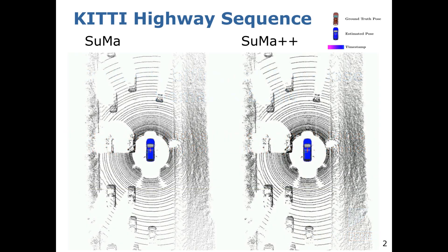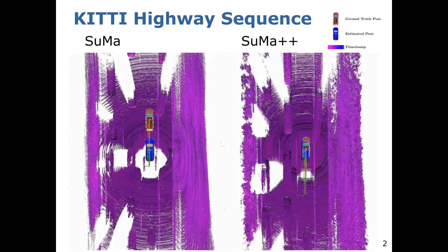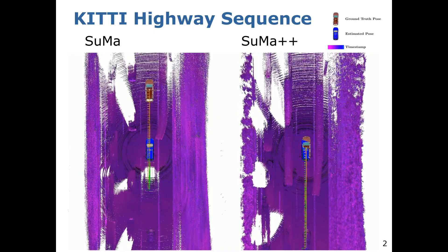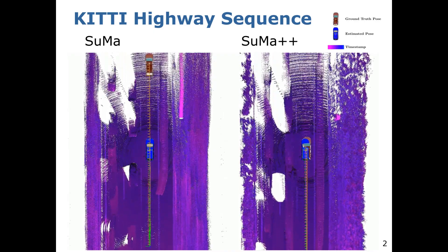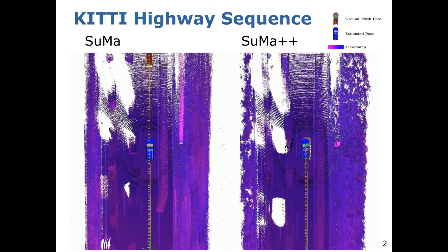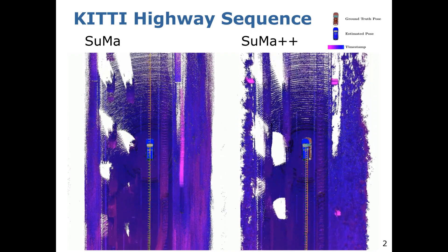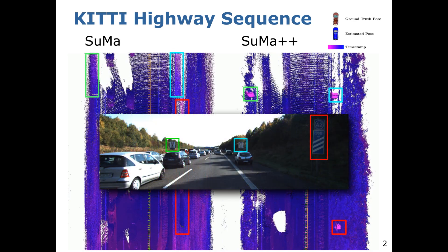If we consider, for example, the KITTI Highway sequence where a lot of objects are moving, you can see on the left-hand side the result estimated only using geometric information, and on the right-hand side the result using our approach. You can see that our estimate is much better, which can especially be seen on the street signs here labeled in color.